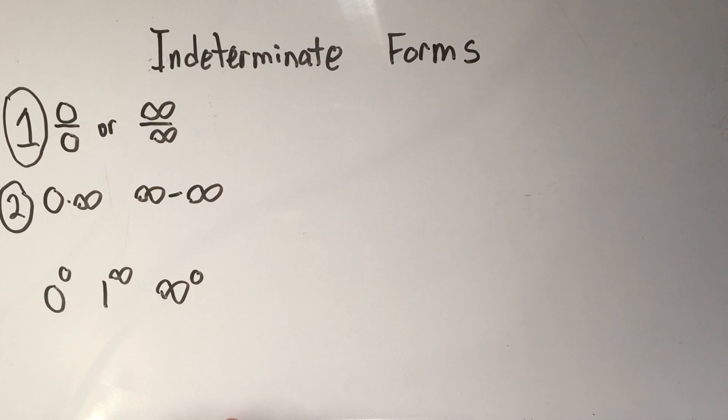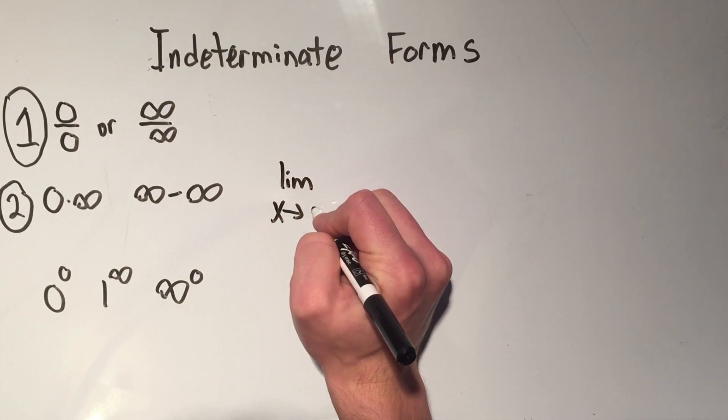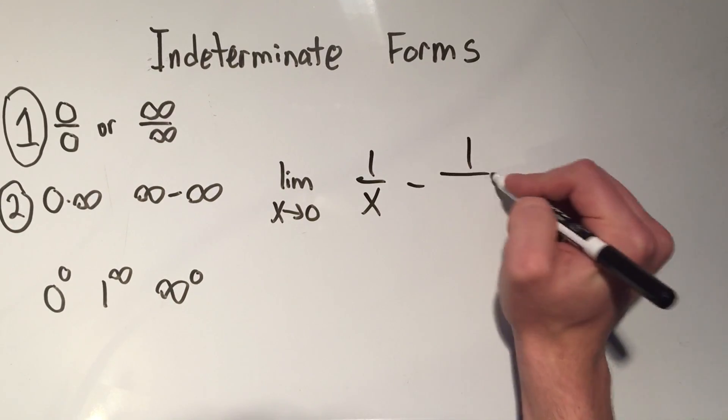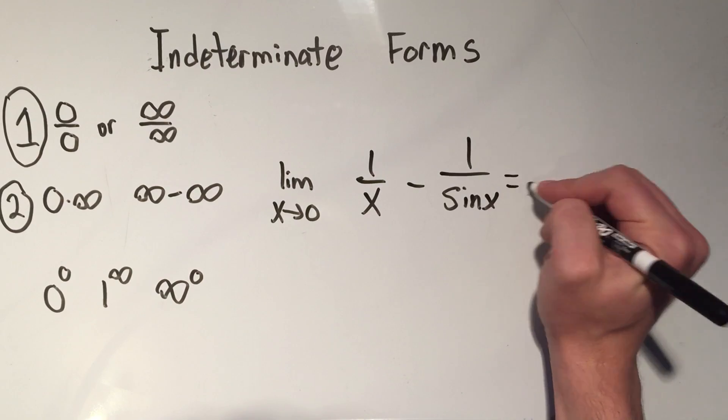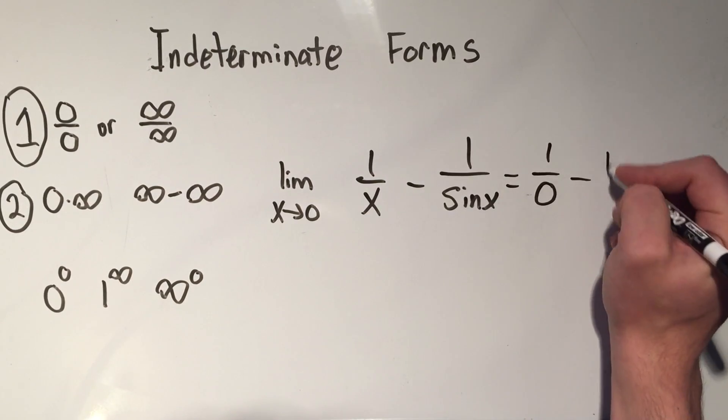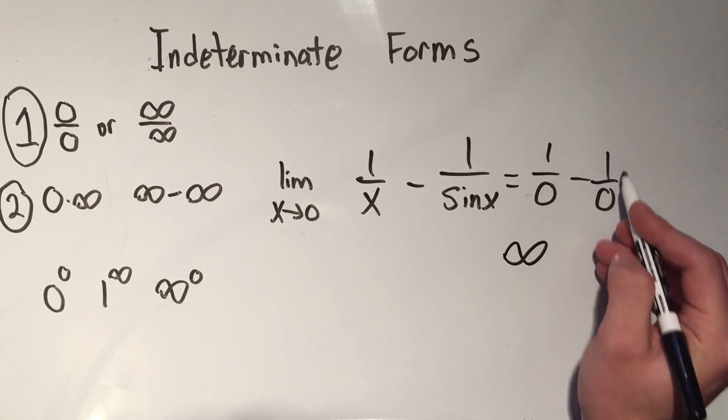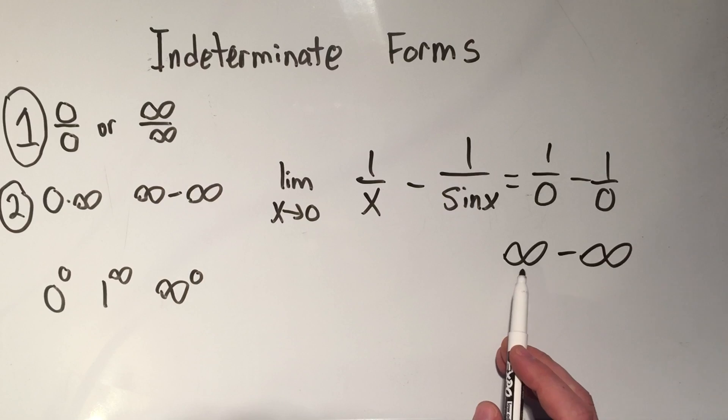The other thing that can happen, and it's a little less common, is infinity minus infinity. Let's say you had the limit as x goes to zero of 1/x minus 1/sin(x). And if I evaluate this thing at zero, I'm going to get 1/0 minus 1/0. One over zero approaches infinity, one over zero approaches infinity. And the question is, is this infinity bigger? Is this infinity bigger? So that's why it's indeterminate.